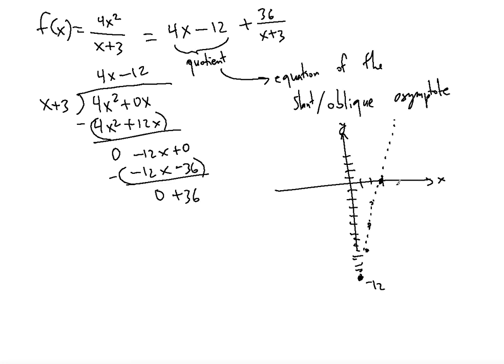So the function value, when you go from negative infinity to positive infinity, it will approach this slant asymptote on both sides. But now let's figure out the vertical asymptote.